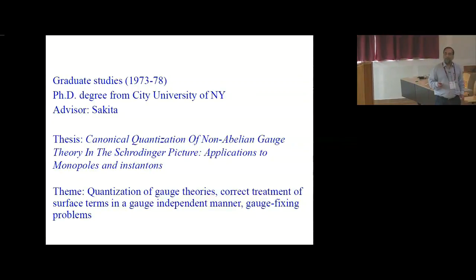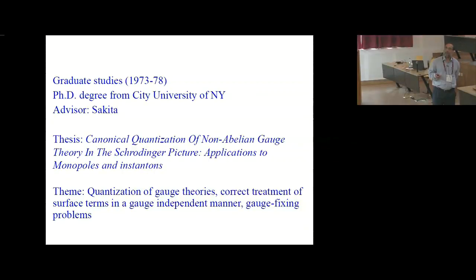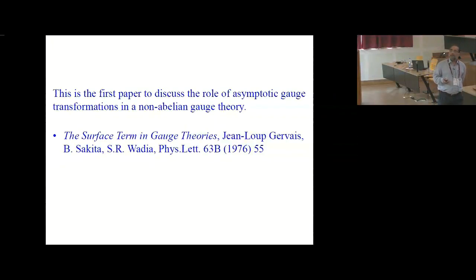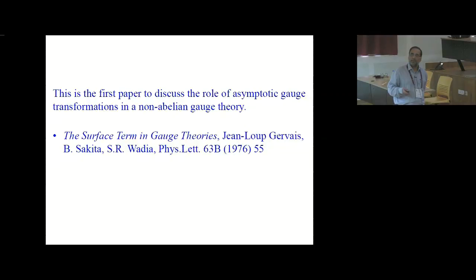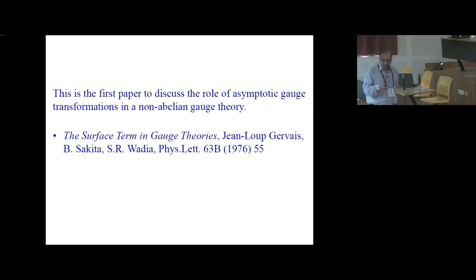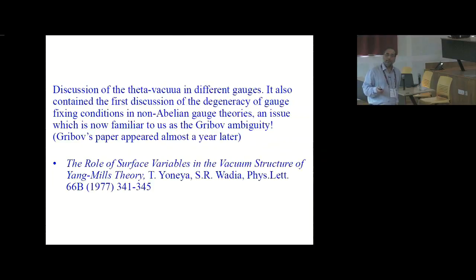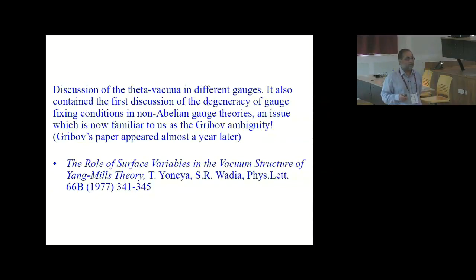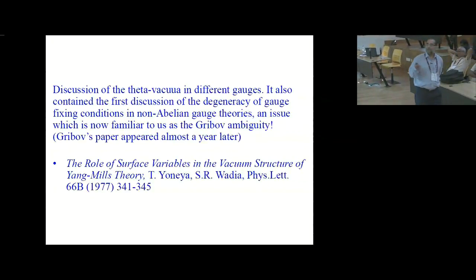From this period I have picked up two papers which I think are very important. The first is the first paper to discuss the role of asymptotic gauge transformations in a non-abelian gauge theory — the surface term in gauge theories, with Gervais and Sakita. This paper showed how surface terms can be correctly treated in gauge theories. The other paper is with Yonea on the role of surface variables in the vacuum structure of Yang-Mills theory, giving a discussion of theta vacua in different gauges. That was an important question at the time — whether the vacuum structure of gauge theories is independent of the gauge in which you're working.